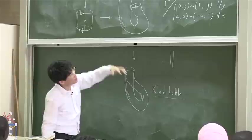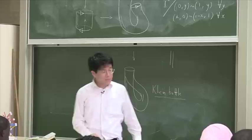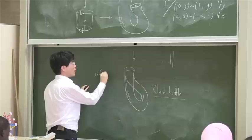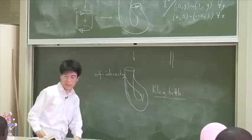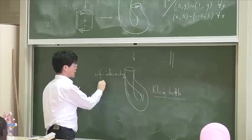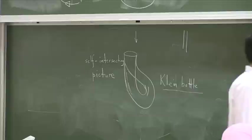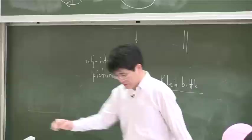So, the result of this quotient, the quotient space of the square by those equivalence relations or those identifications is the Klein bottle. Now, this is what we call a self-intersecting picture because it cuts, the bottle cuts through its own surface. But as I said, we're using magic material, so that's okay.